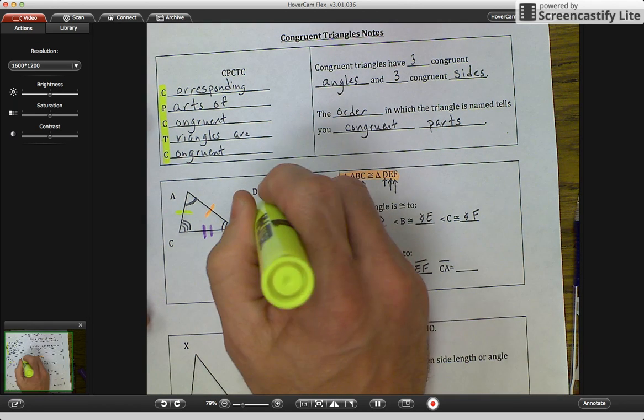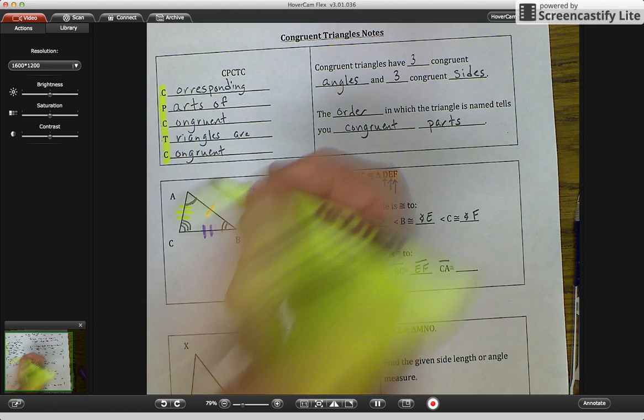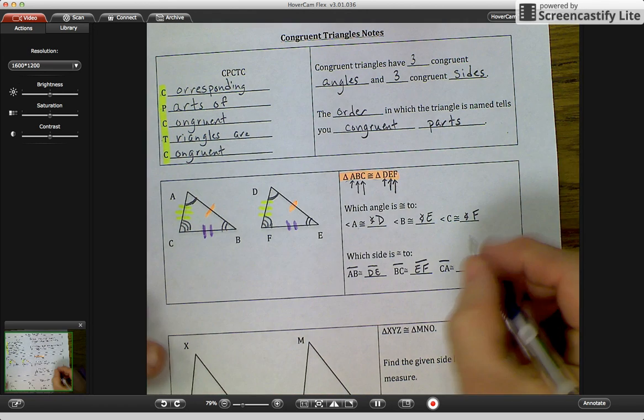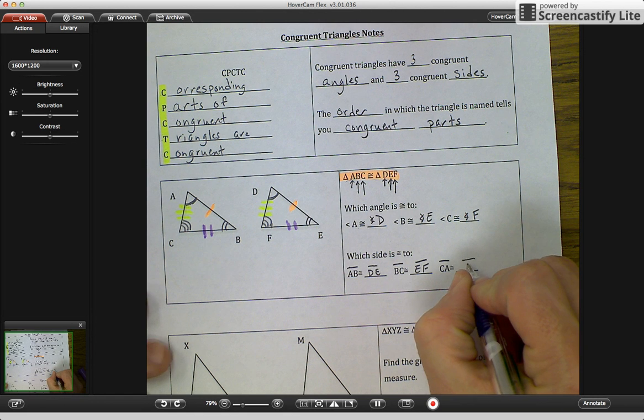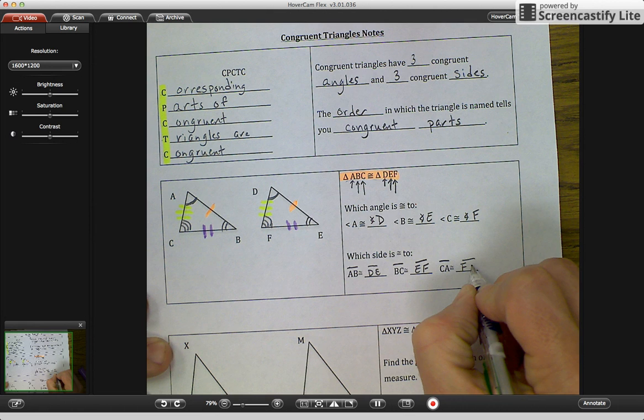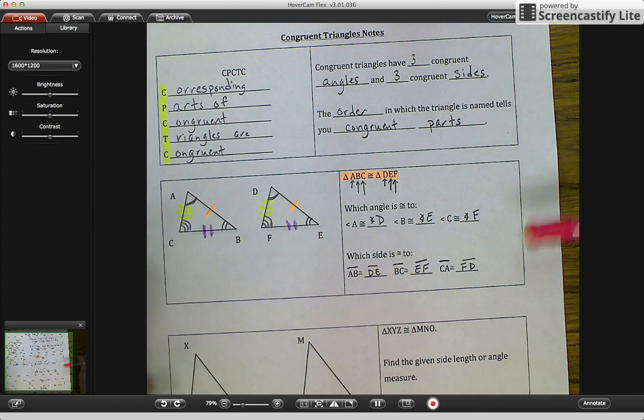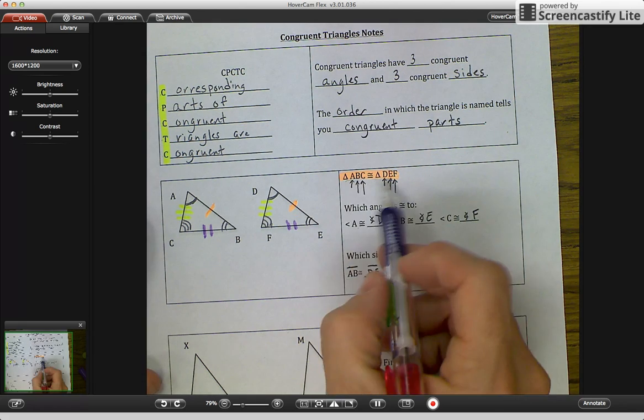Actually, they should have three marks, not just one. Three marks, not just one. You cannot have the same amount of marks. CA is congruent to, and since we started with C ended with A, we have to start with F and end with D. So that's the way the order tells you.